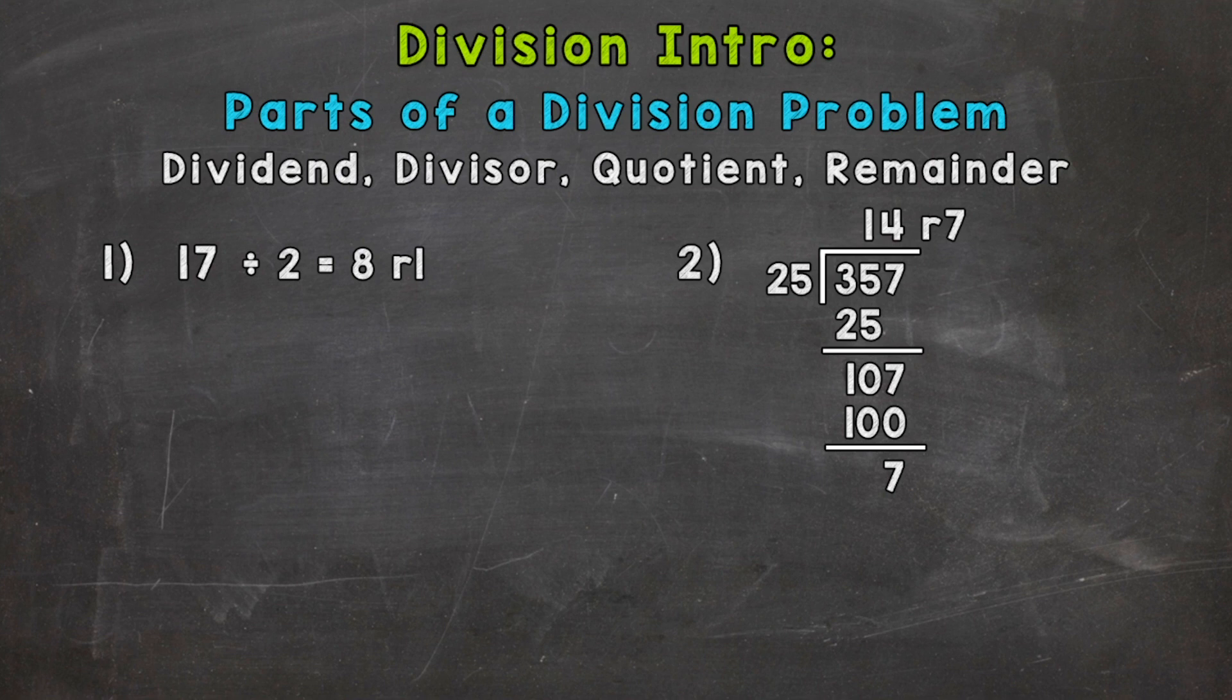So let's jump right into number one where we have 17 divided by 2 equals 8 remainder 1. Now the 17 there is being divided or split up, so whatever number is being divided or split up, that's what we call our dividend.